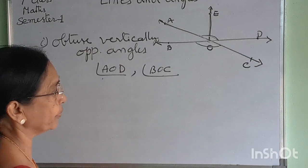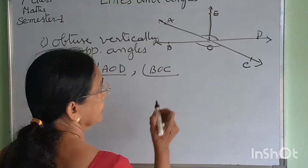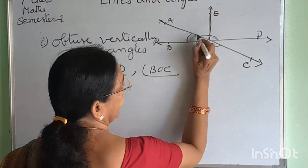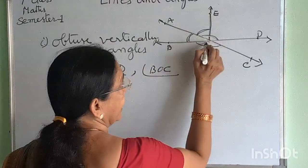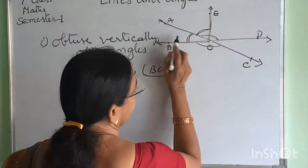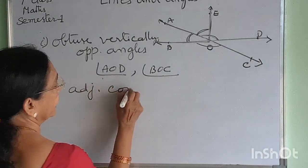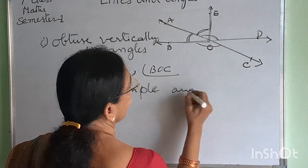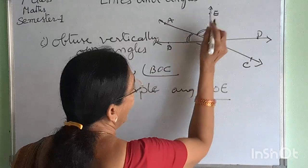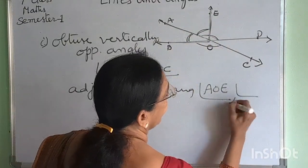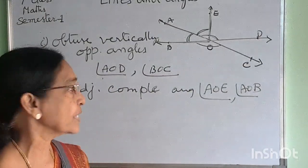Next: adjacent complementary angles. Adjacent means side by side. These two angles — this angle and this angle — are adjacent and their sum is 90 degrees. These two lines are perpendicular. So these two are adjacent complementary angles. The angles are angle EON or angle AOD. Angle AOD — these two are adjacent complementary angles, side by side with sum 90 degrees.